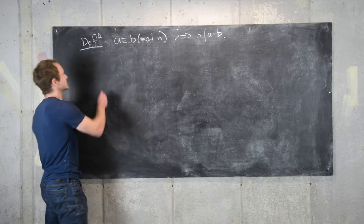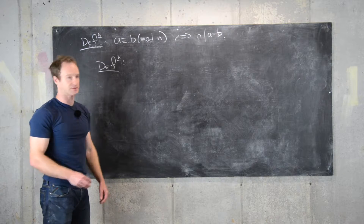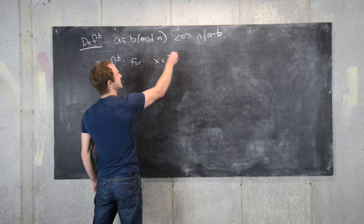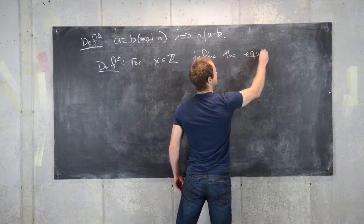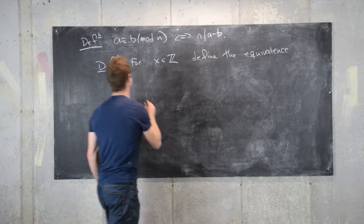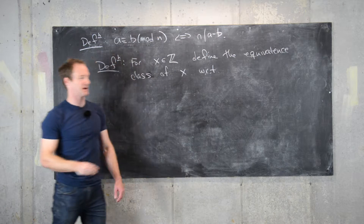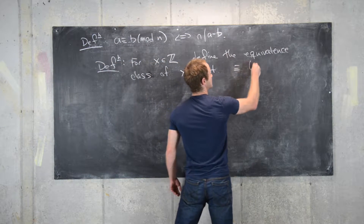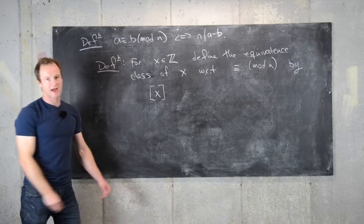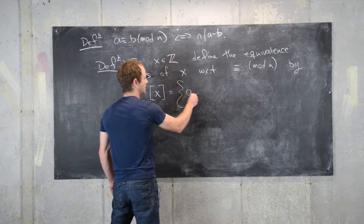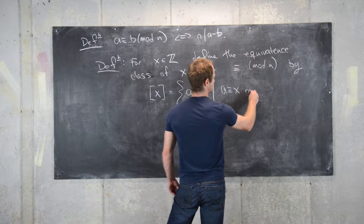This definition is for an equivalence class related to this equivalence relation. For x in Z, define the equivalence class of x with respect to congruence modulo n as follows: we write x in brackets, and this is equal to all integers a such that a is congruent to x mod n.